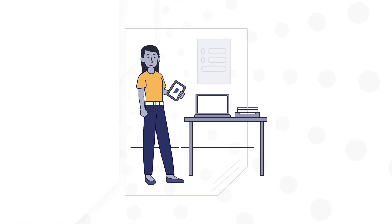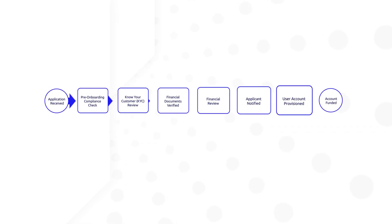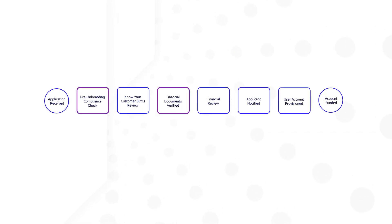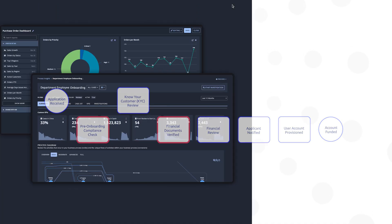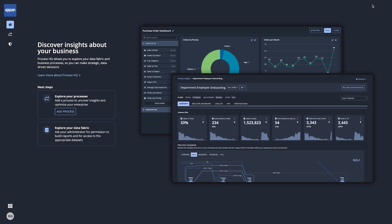Paula works at a financial services company and is responsible for the company's process for onboarding new clients. She knows this process is taking longer than expected, but she doesn't know why. The company recently began using Process HQ for performance measurement and analysis. Using data that the company already collected in its Appian applications eliminated the need for lengthy data preparation, and Paula and other business users could quickly start their guided process exploration and analysis.